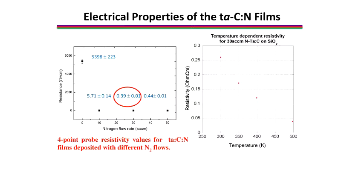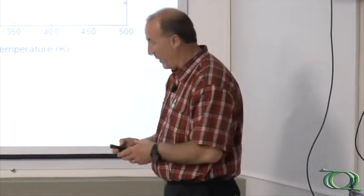A film with no nitrogen added has 5,000 ohm centimeter resistivity. We add some nitrogen, the resistivity decreases by three orders of magnitude. Add a little more nitrogen, decreases by one order of magnitude and then not much change at all. We tend to work with films between 10 and 30 SCCM of nitrogen. This has a good conductivity for all of the measurements that we're interested in.